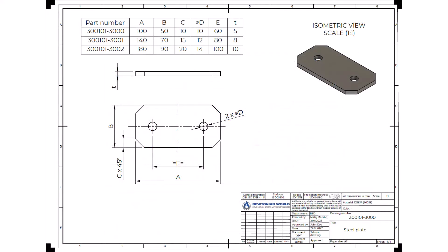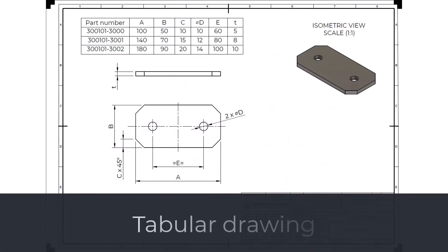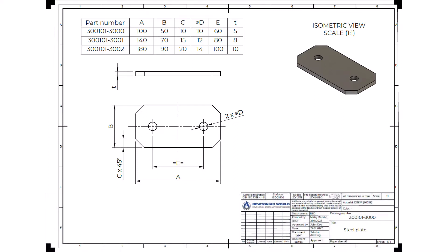The tabular drawing is defined as the drawing listing differing variations of a specific configuration using a single, common illustration. The shape of the component is always the same, but the relationship between different features is changing. In the table on the drawing, you can see that we have different values of A, B, C, D, E, and T for the different configurations of the component. We could create a different drawing for each plate, but that is unnecessary additional work.